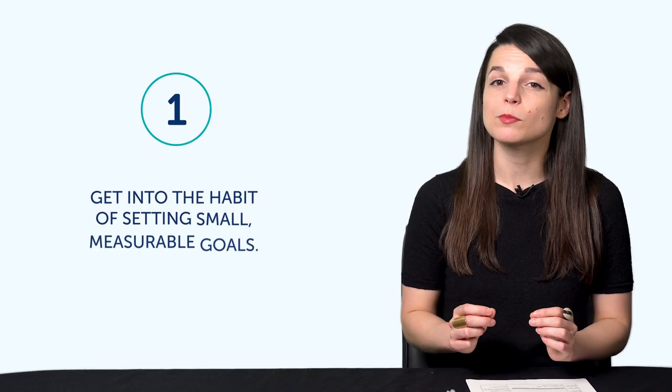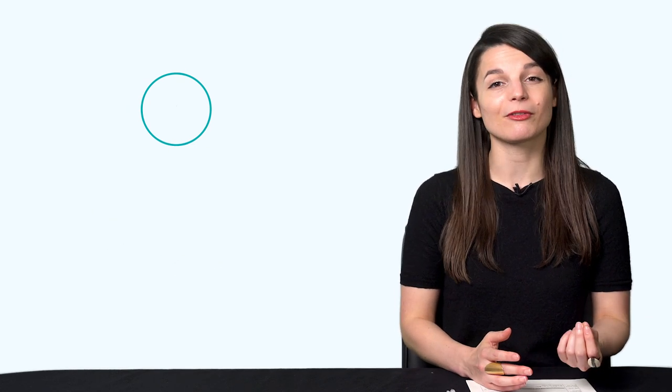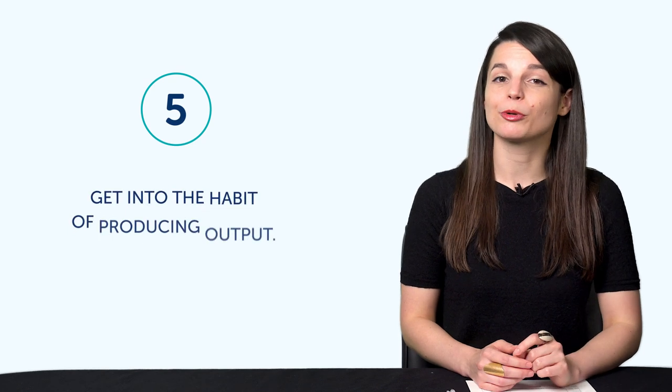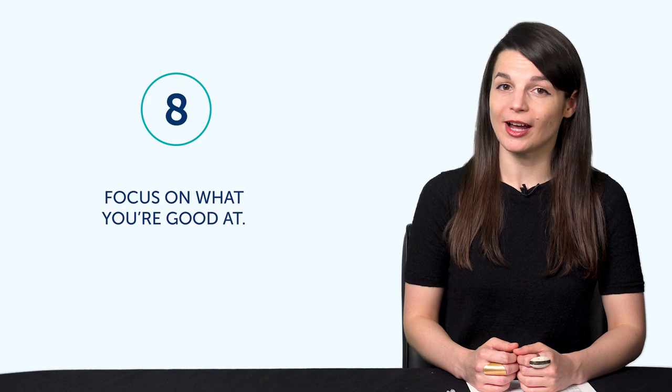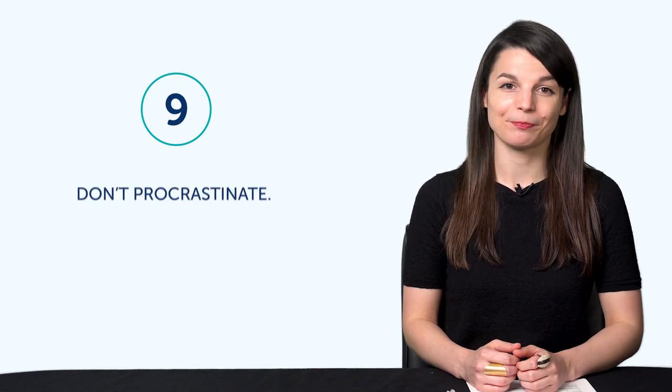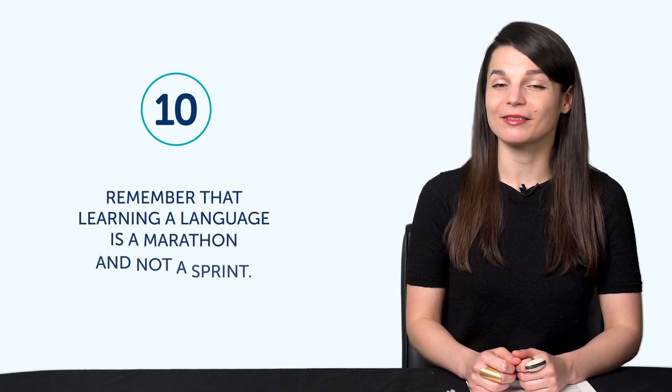So let's recap. Number one. Get into the habit of setting small, measurable goals. Number two. Create a routine. Number three. Don't cram. Number four. Prepare lines and conversations ahead of time. Number five. Get into the habit of producing output. Number six. Come back and review. Number seven. Look for solutions. Number eight. Focus on what you're good at. Number nine. Don't procrastinate. Number 10. Remember that learning a language is a marathon and not a sprint.